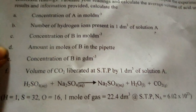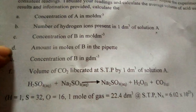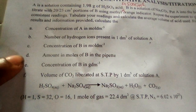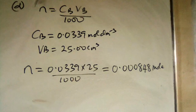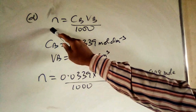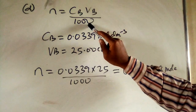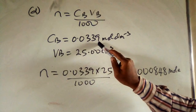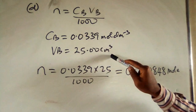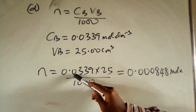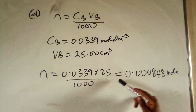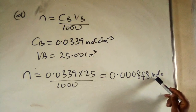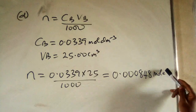Question D asks for the amount in moles of B in the pipette (25 cm³). Using the formula: moles = CB × VB / 1000 = 0.0339 × 25 / 1000 = 8.48×10⁻⁴ mol to 3 significant figures. This is the amount of sodium carbonate in the pipette.